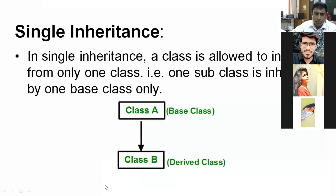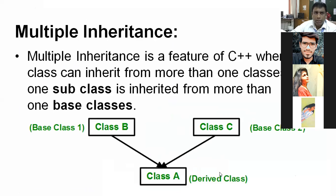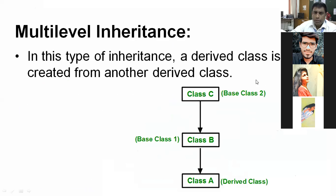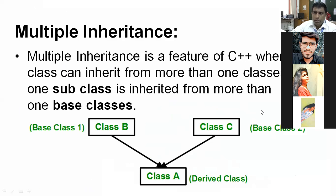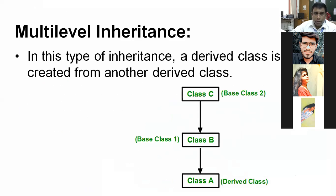Single level inheritance: Class A is the base class and class B is the derived class. This is called multiple inheritance: both class B and class C are base classes, and class A is the derived class which accesses the properties of class B and class C.